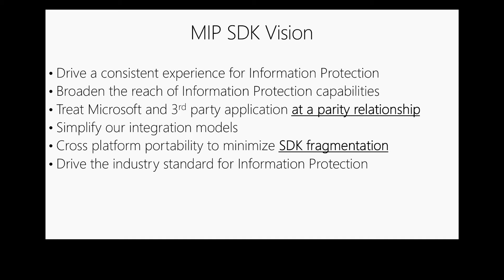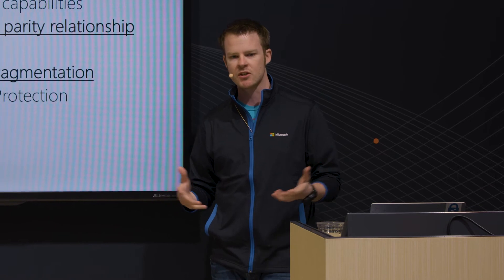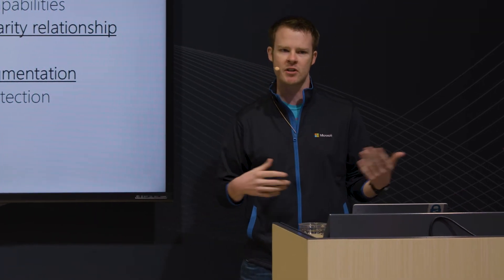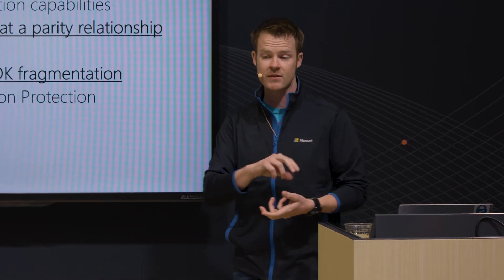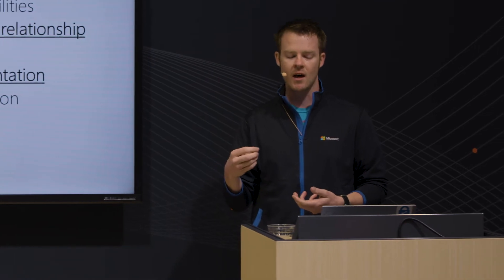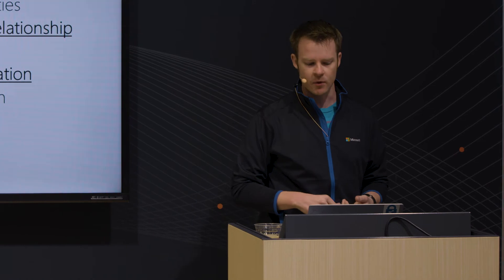Our vision for the SDK is that we'll drive a consistent experience for information protection. This is really important. I've been working on the information protection team at Microsoft for two and a half years, and one of the biggest problems we find is that AIP works great in Office, but as soon as we start talking about other applications — think CAD/CAM, design tools, or even PDF readers — it starts to fail because there's not that compatibility with both the classification experience and RMS protection. The SDK will help drive that consistency across all those platforms.